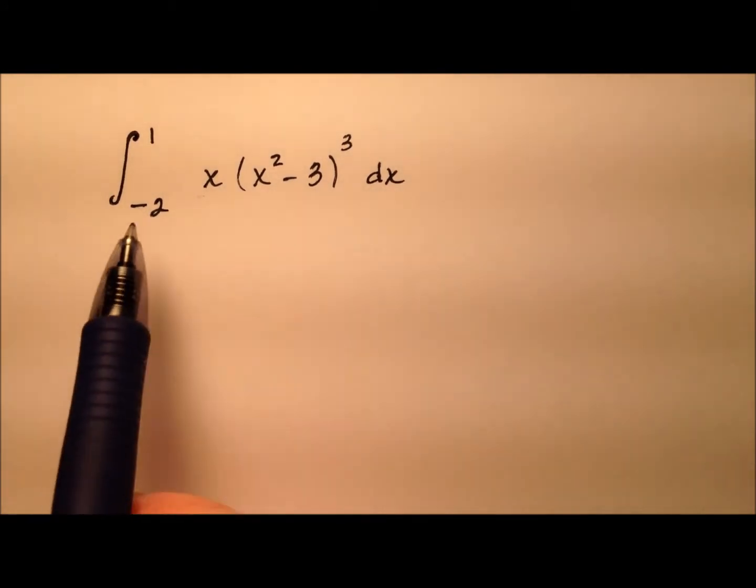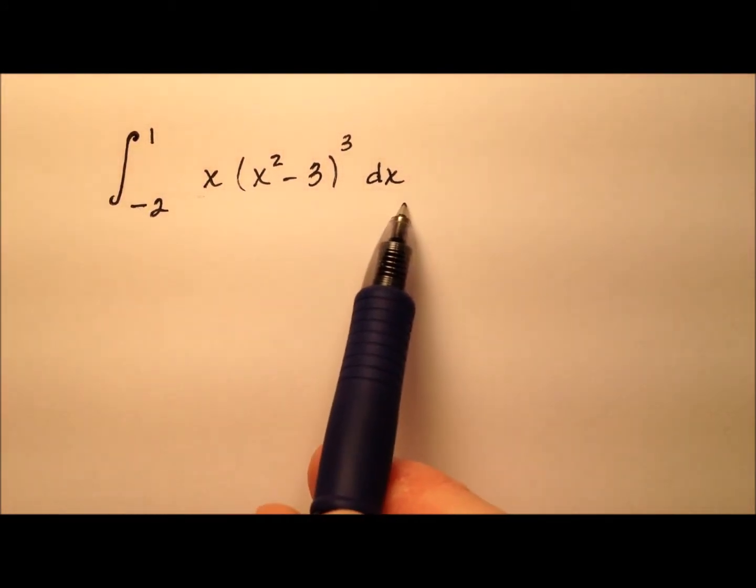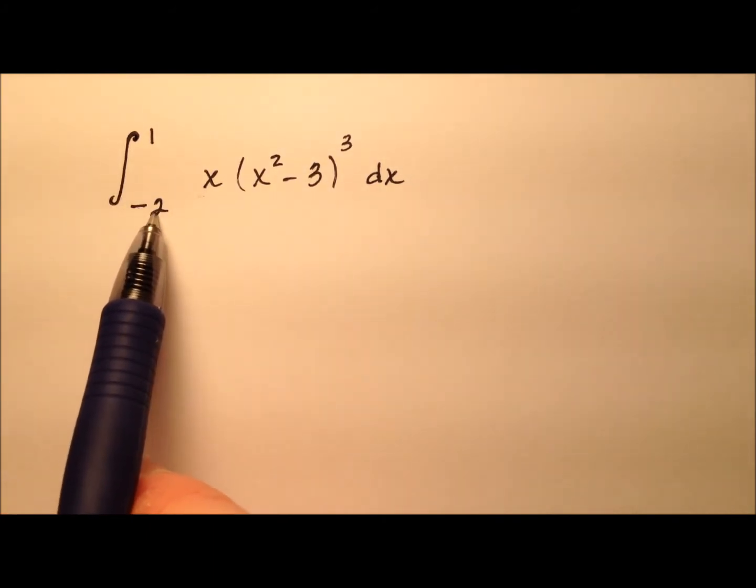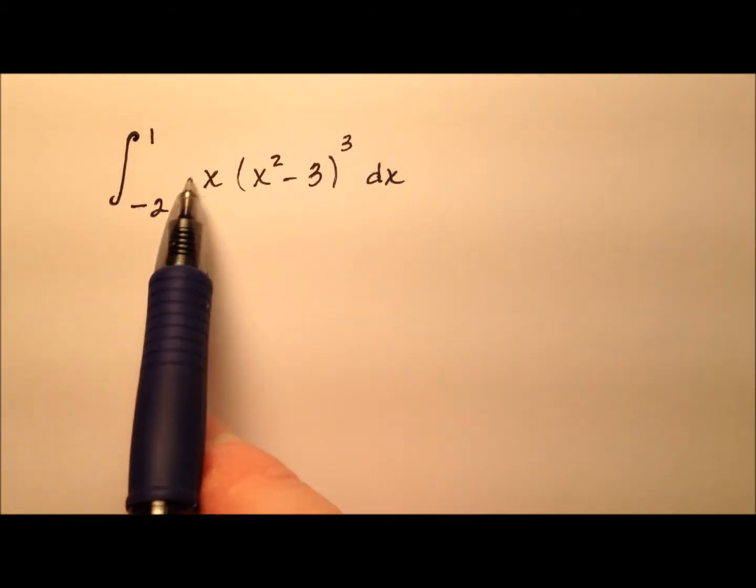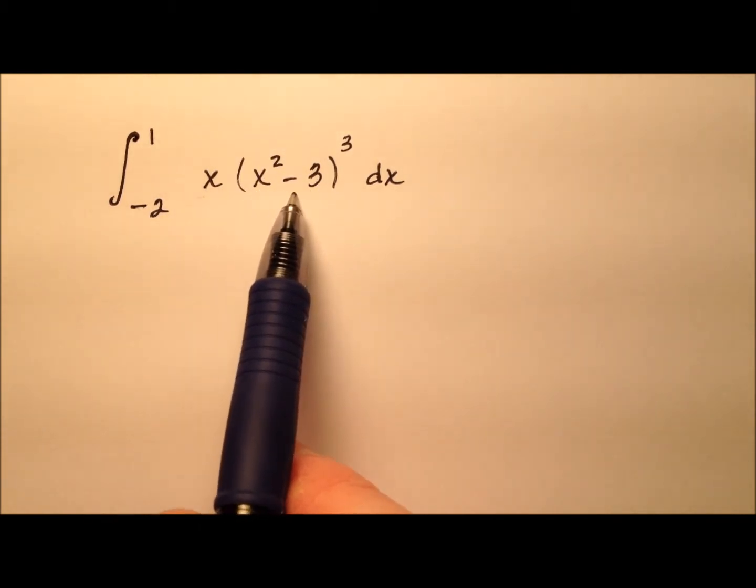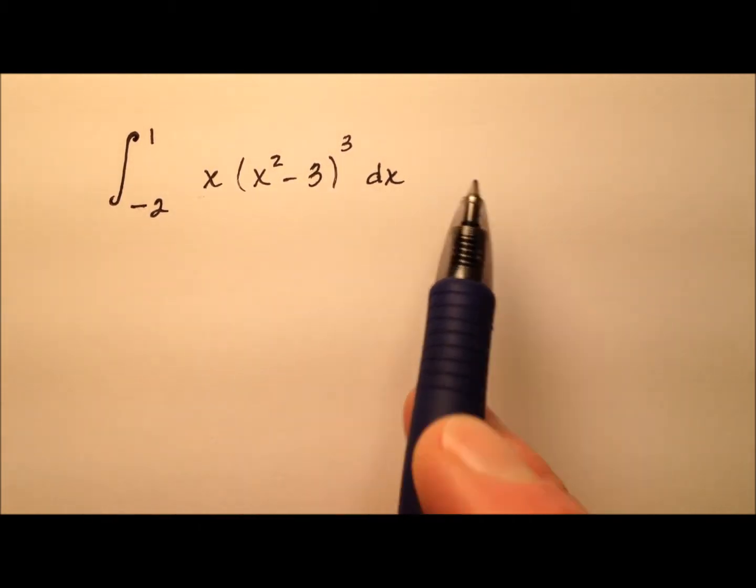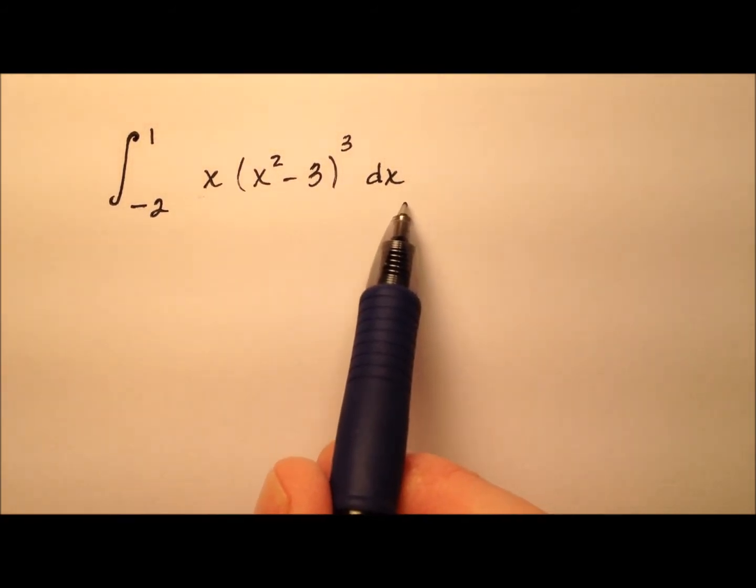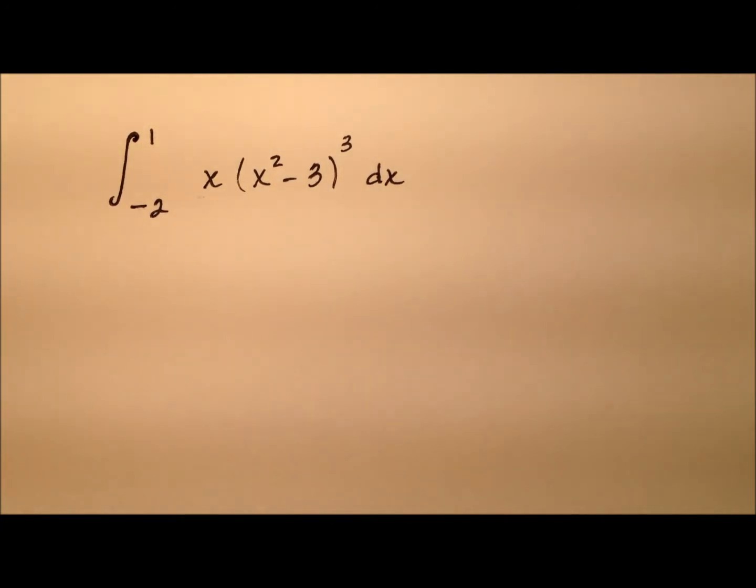In this example, we have ourselves here a definite integral that we would like to evaluate. It looks like it's the integral from negative 2 to 1, and our integrand here is going to be x times x squared minus 3 quantity cubed, with respect to x. If you'd like to go ahead and give this a try first, pause the video and then come back and we'll do it together.